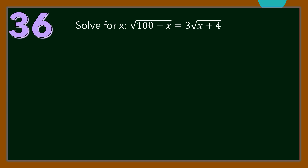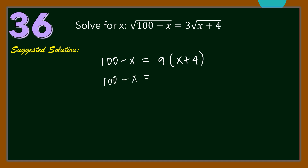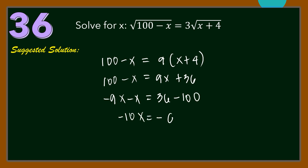Number 36. Solve for X in the equation: square root of (100 minus X) equals 3 times the square root of (X plus 4). Squaring both sides, we have 100 minus X equals 9 times (X plus 4), which is 9X plus 36. So negative 9X minus X equals 36 minus 100, giving negative 10X equals negative 64. Dividing both sides by negative 10, we get X equals 64 over 10, or 6.4.